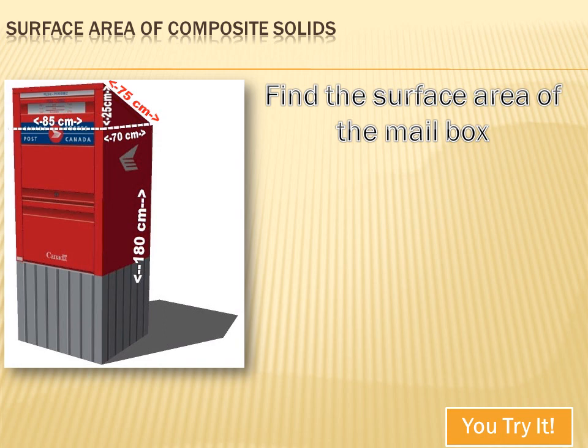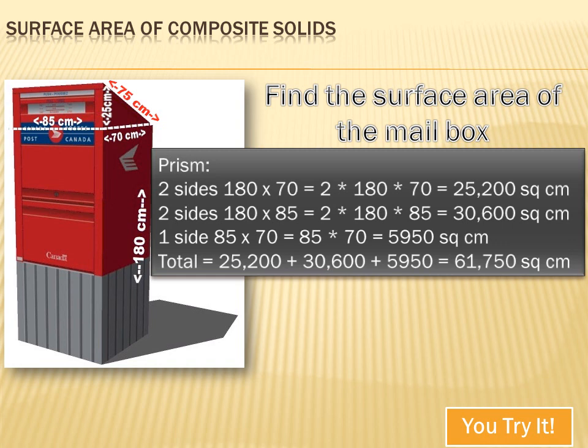Not another mailbox problem? Oh yeah — you've got to put up with another mailbox problem. The first thing you've got to do is figure out what solids have been combined to make this composite figure. I can see a rectangular prism, and sitting on top of it, I can see a triangular prism. So there are two figures: a triangular prism sitting on top of a rectangular prism. Let's deal with the rectangular prism first.